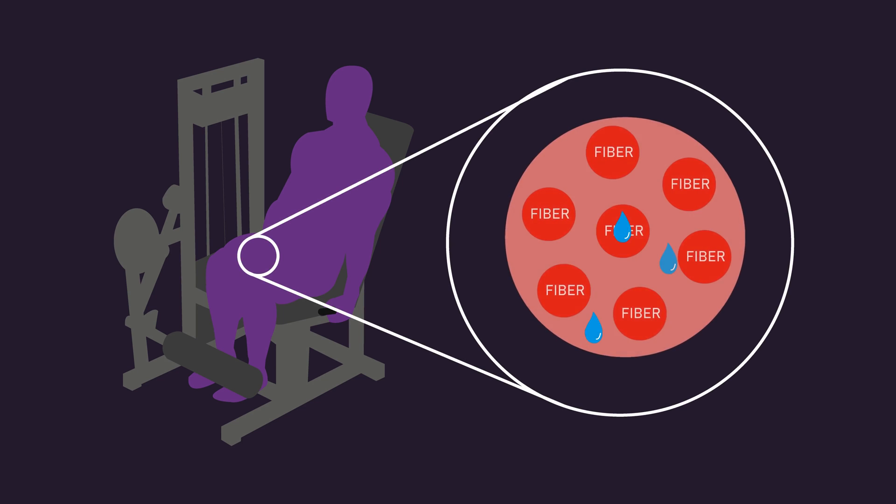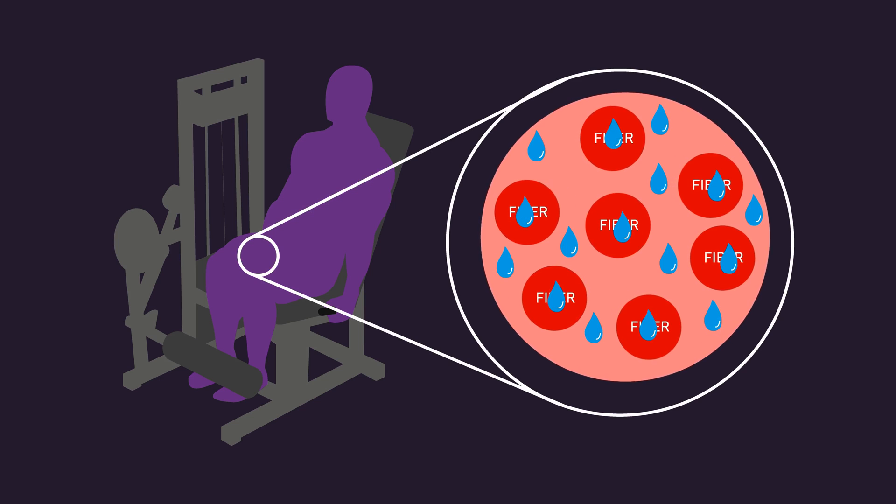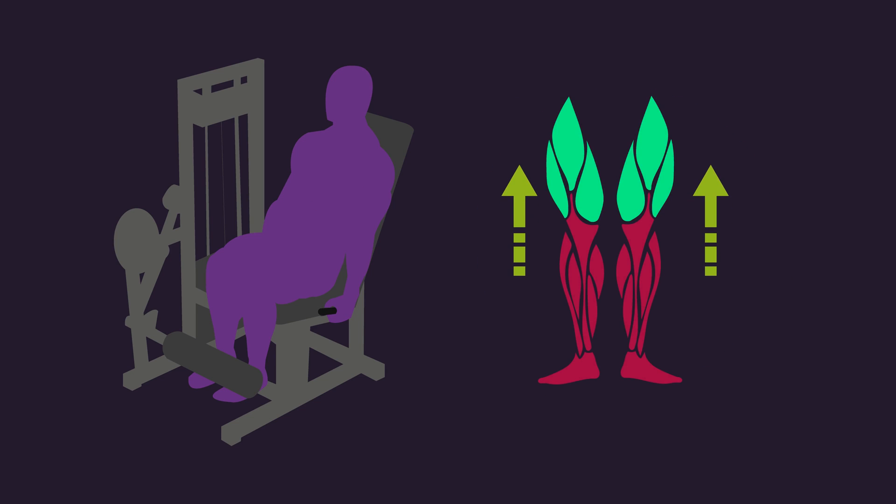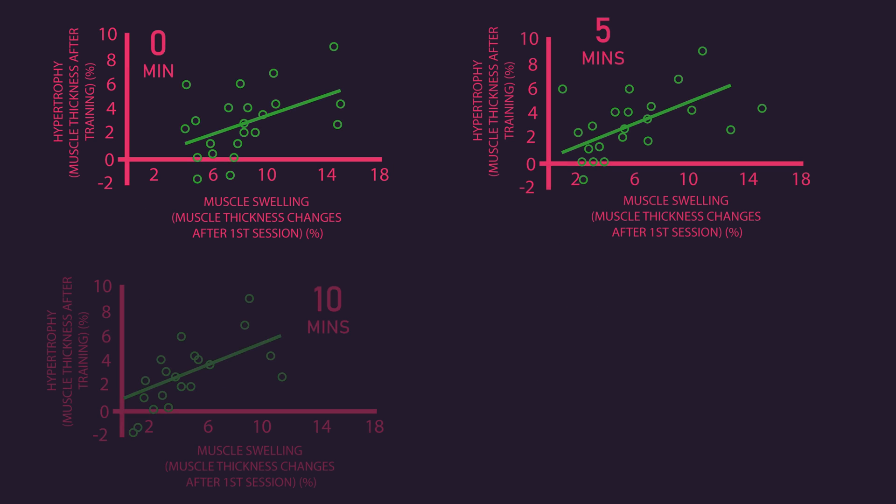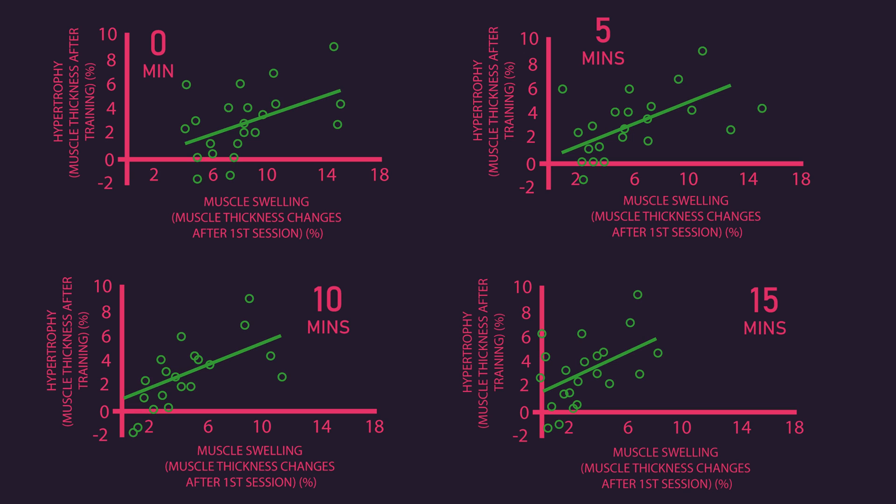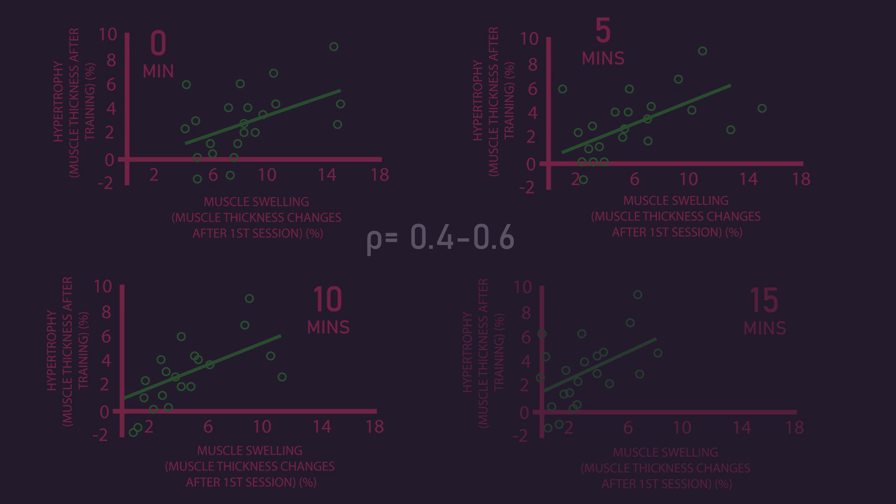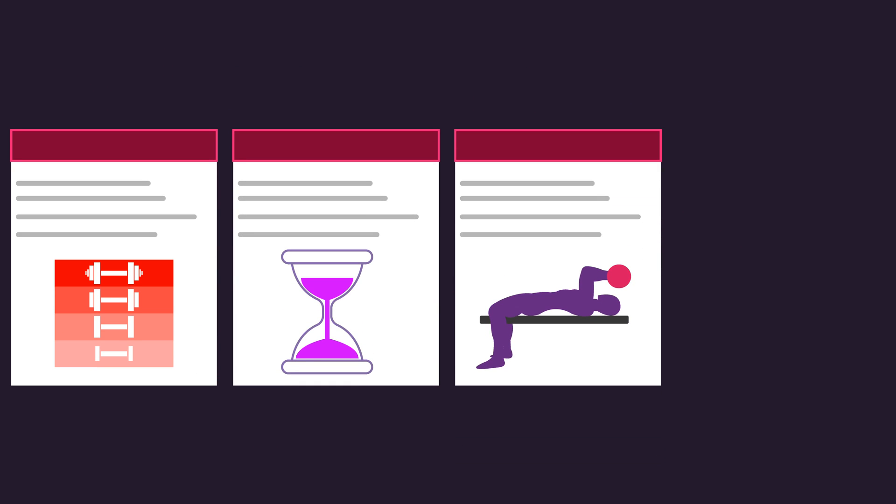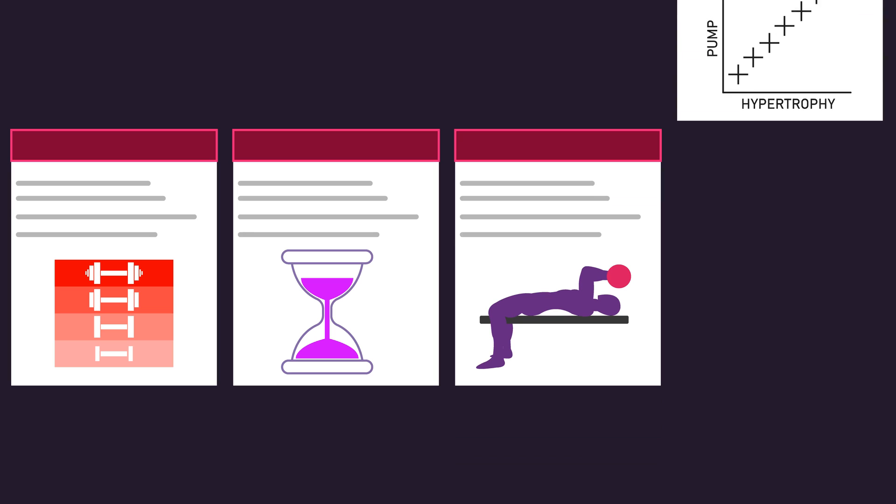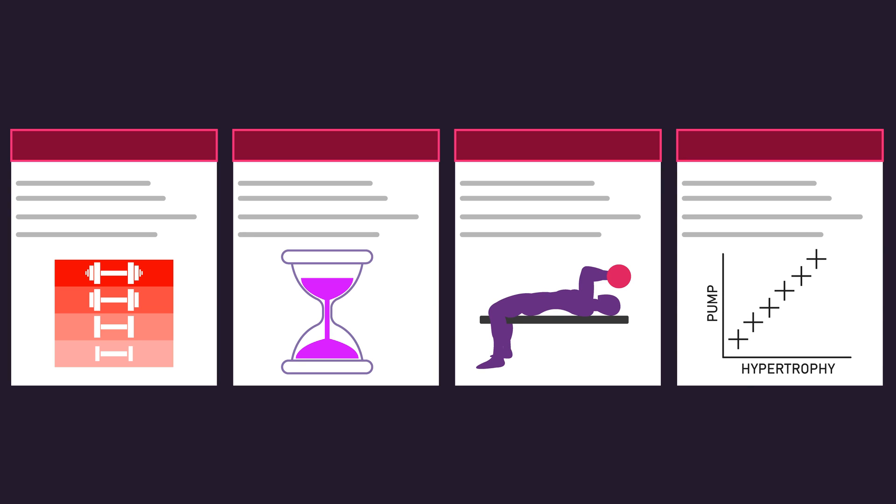Put another way, the subjects that saw the greatest pump of their quadriceps after the first session ultimately seemed to experience the greatest quadriceps hypertrophy. Although, it's worth pointing out the correlations were not super strong, the Spearman coefficient ranged from 0.4 to 0.6. One is what would indicate a perfect positive linear relationship. So, some areas of the drop set, rest interval, and constant tension literature, as well as a correlational study potentially suggest training in a way that produces a greater pump evokes more hypertrophy.